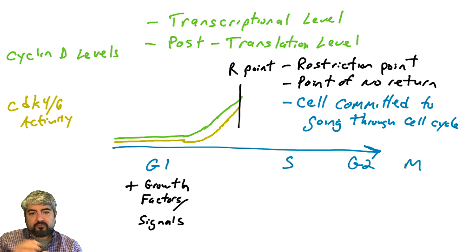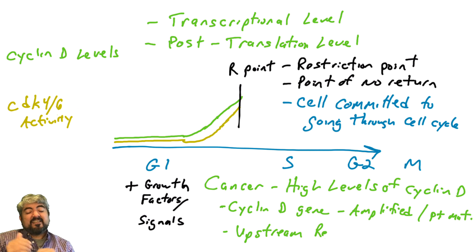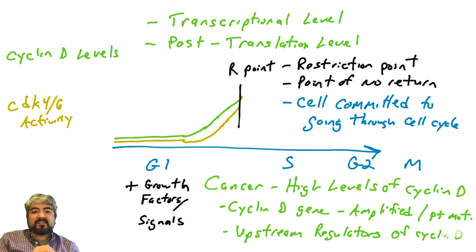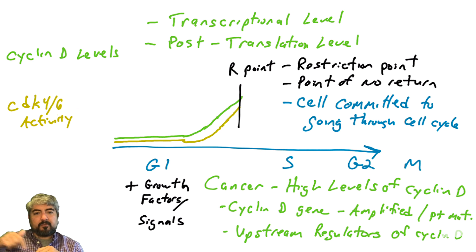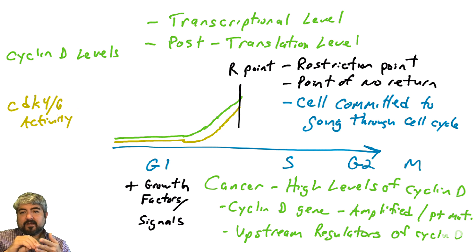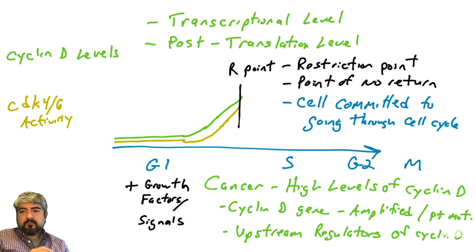Once the cell is committed to going through the cell cycle and making more cells, in human cancers high levels of cyclin-D are associated with cancer. If cells have high levels of cyclin-D — either because the cyclin-D gene is mutated or the things that regulate cyclin-D are mutated — sustained high levels of cyclin-D will keep cells going from G1 into S phase and perpetuating the cell cycle. In the next video we'll talk about what regulates cyclin-D at the transcription level and how that relates to phosphorylating substrates and getting cells to go through the R point.